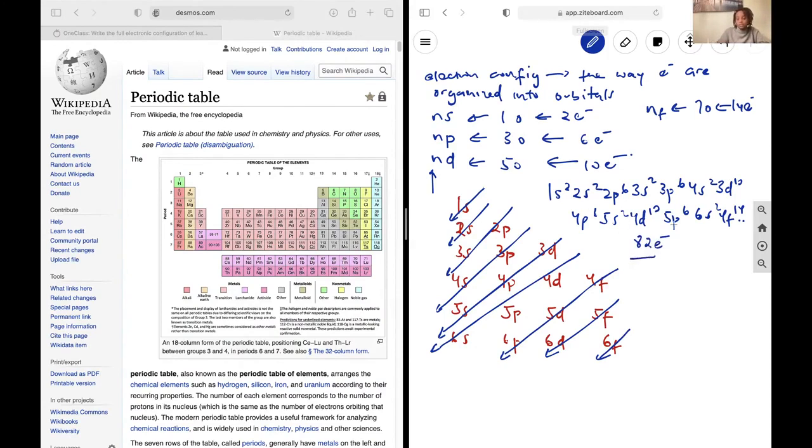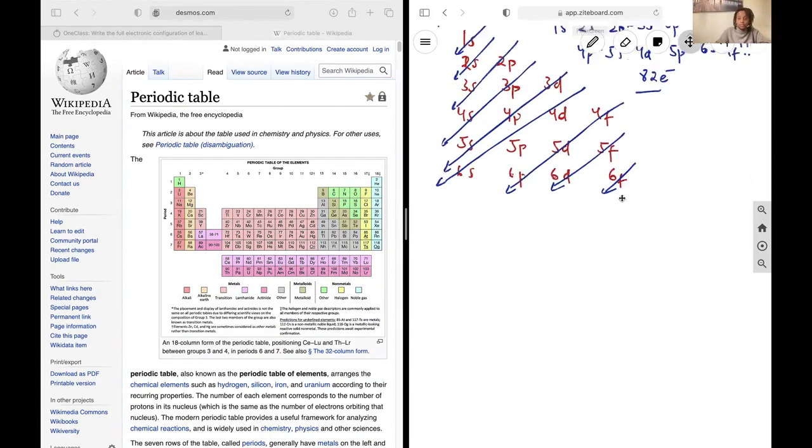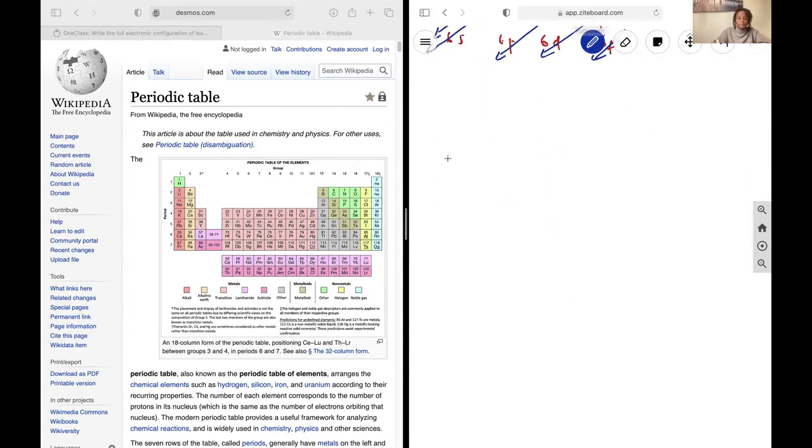And so you just count all of the electrons until you hit 82. Another way to do this is to just simply read the periodic table, and so to get all the way down here, I can just count from the top until I hit lead, and as I'm counting, I'm counting out the orbitals.